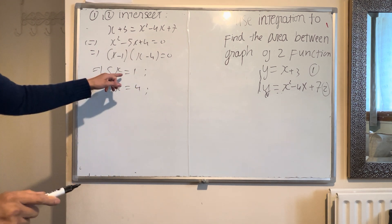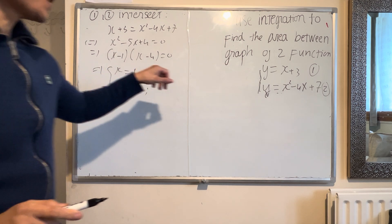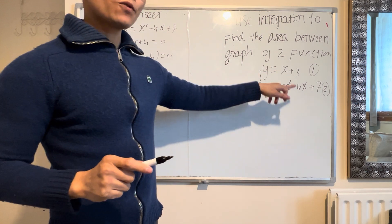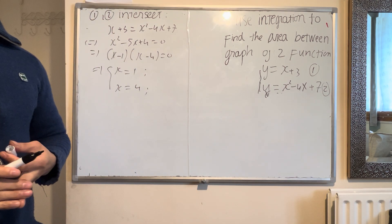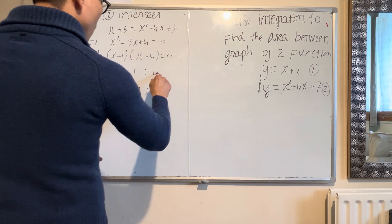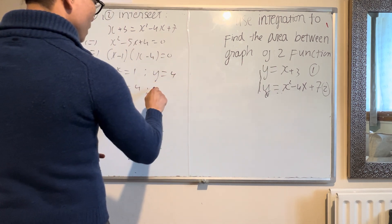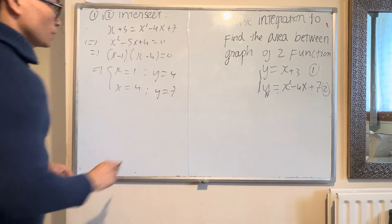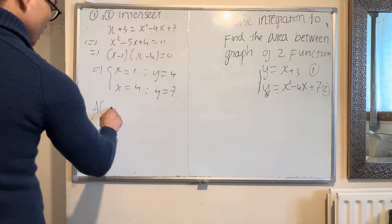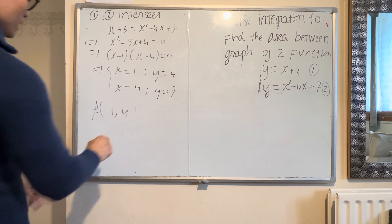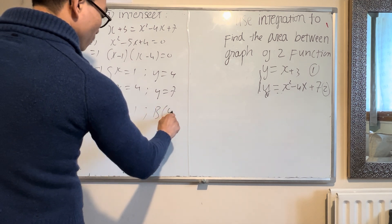With the x-coordinates found, substitute back into one of the functions to get the y-coordinates. Substituting gives y equals 4 and y equals 7. So we have two intersection points: A with coordinates (1, 4) and B with coordinates (4, 7).